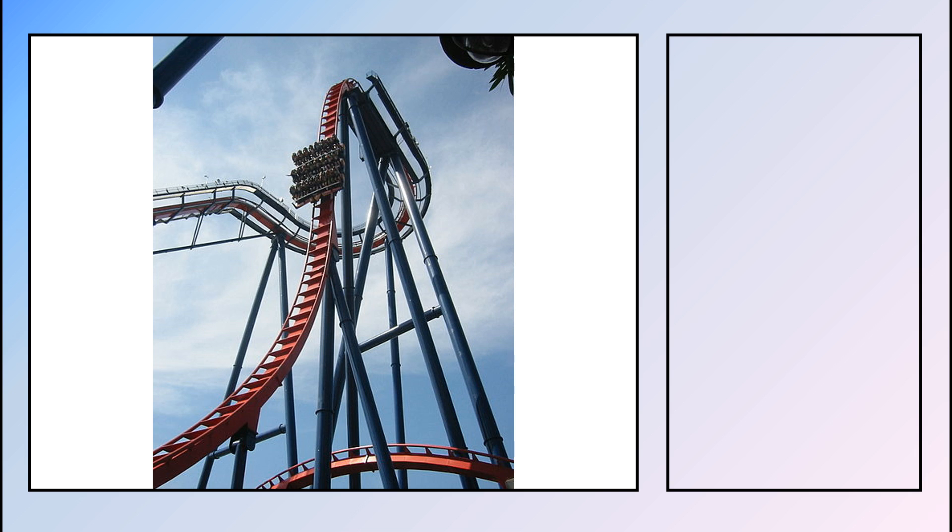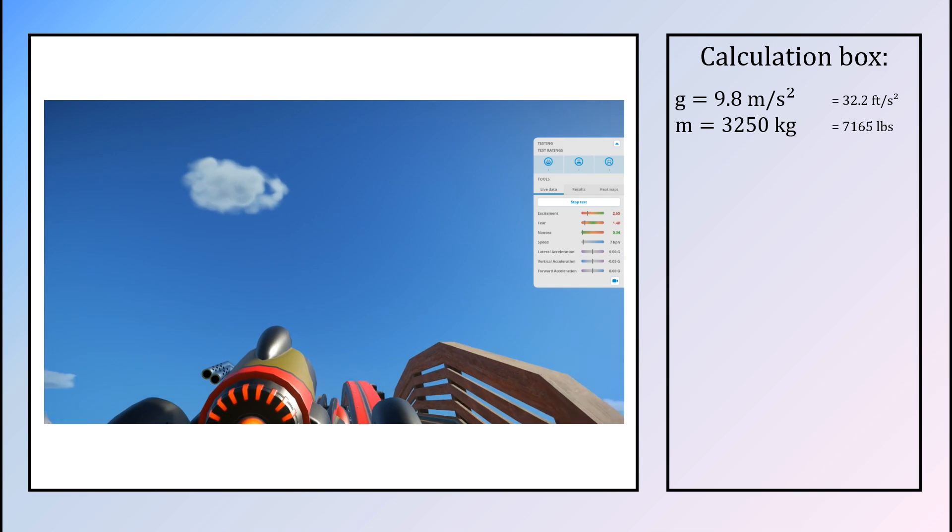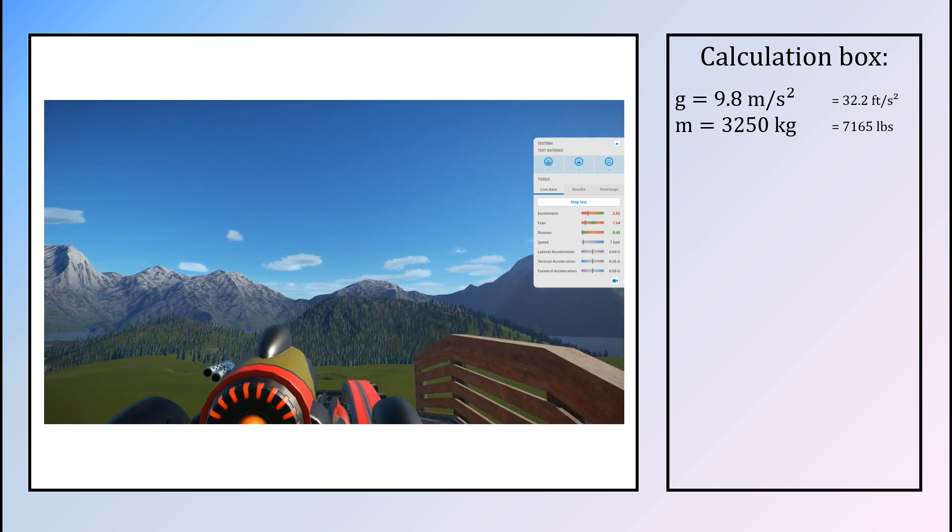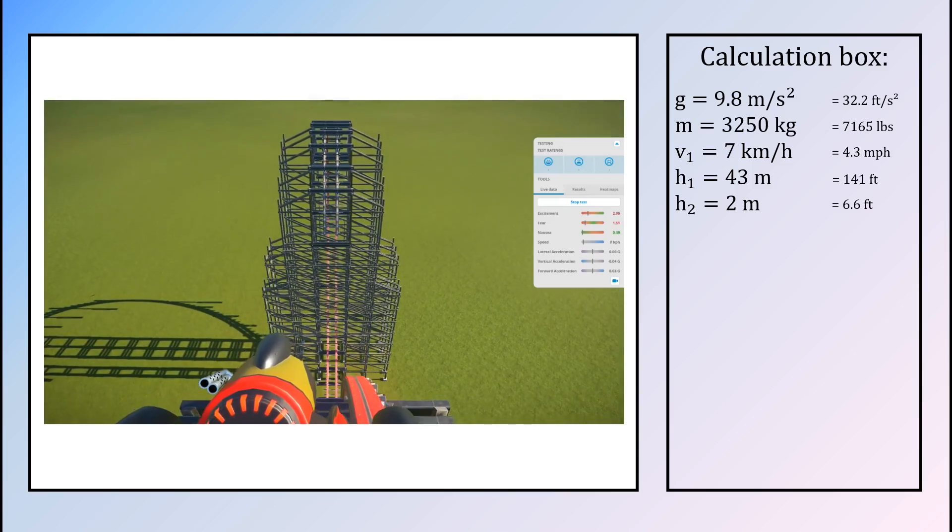Let's evaluate a model of a roller coaster, which I visualized in the game Planet Coaster. In this simulation, the cart will start on a hill with an initial speed of 7 km per hour and will then make a drop of 41 meters.